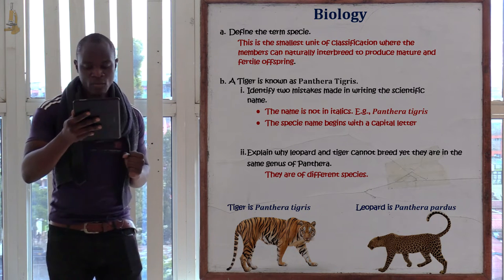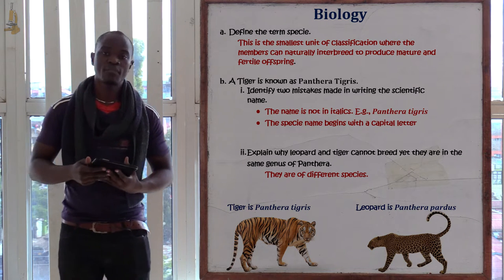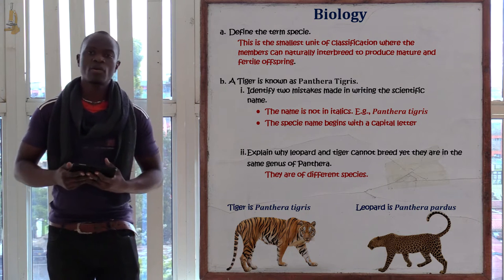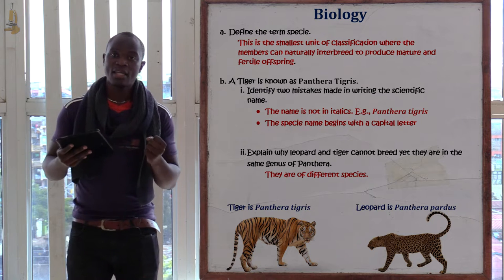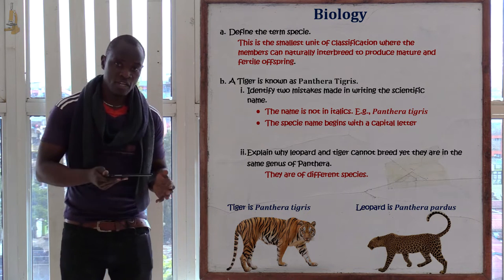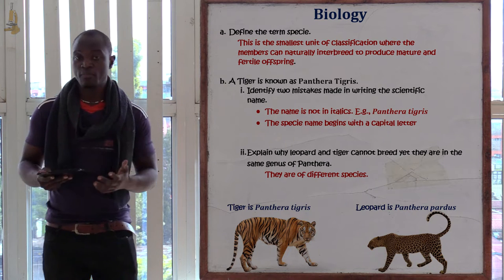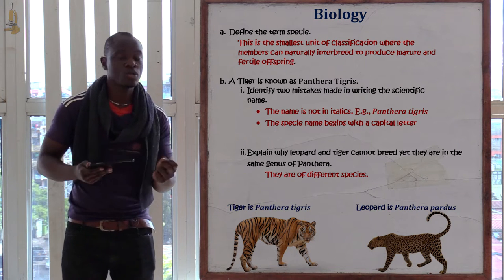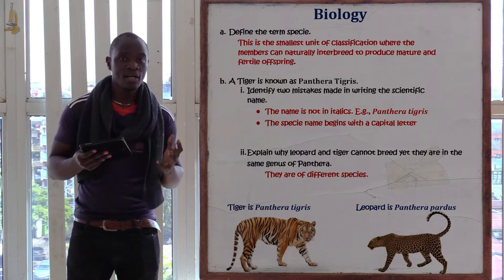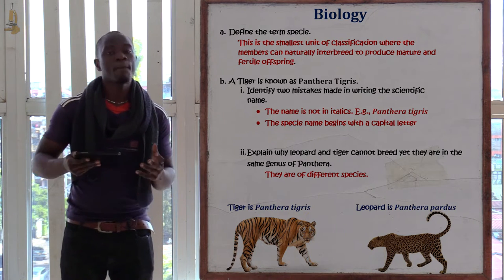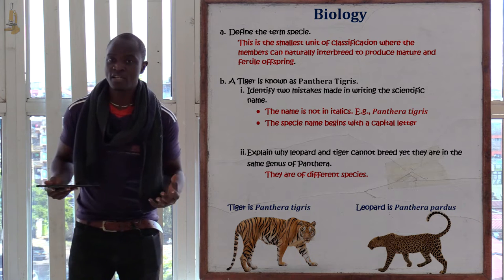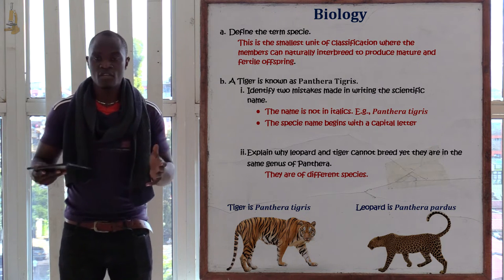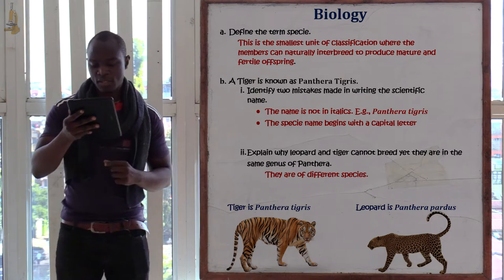The next part asks: explain why a leopard and a tiger cannot breed, yet they belong to the same genus Panthera. The answer is that although they belong to the same genus, they are of different species. Since species is the smallest unit of classification whereby organisms can naturally interbreed to give a fertile offspring, and the leopard and tiger are of different species, they cannot interbreed to get an offspring.